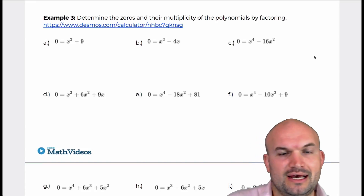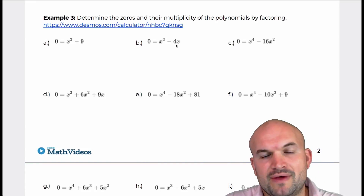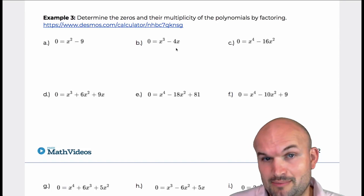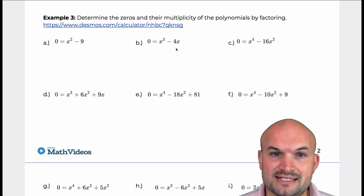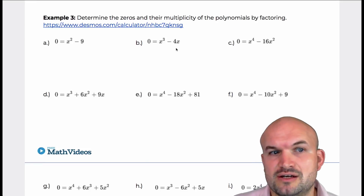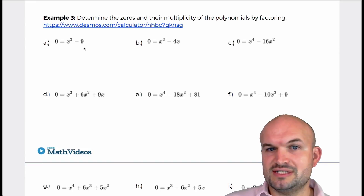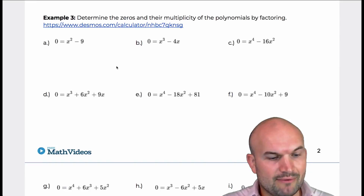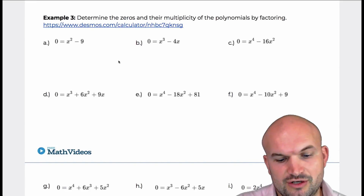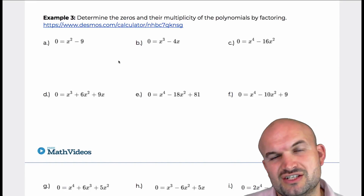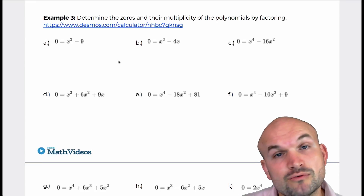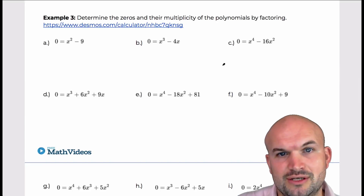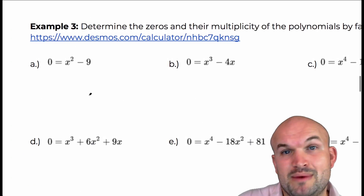The idea of going from an expression in standard form — separated by addition or subtraction, like a polynomial — and rewriting it as a multiplication problem is the process of factoring. On this first example, we could solve without factoring using the square root method, but we'll see later how that can prevent us from finding all the solutions.